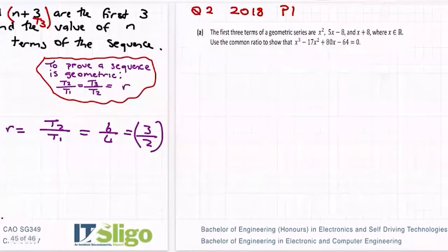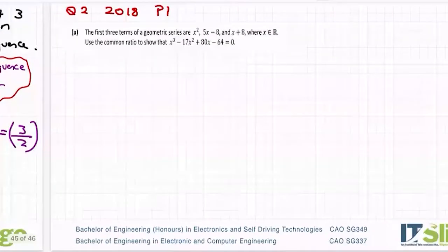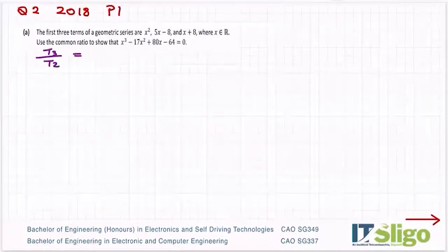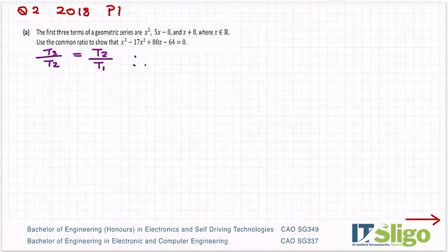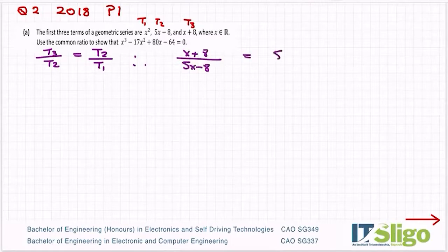We're going to use the fact that t3 over t2 is equal to t2 over t1. So for this one, that's my t1, there's my t2, there's my t3. So I'm going to say x plus 8 over 5x minus 8 is equal to 5x minus 8 over x squared.